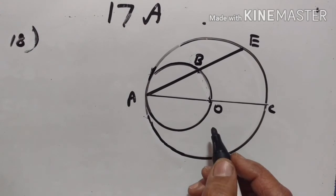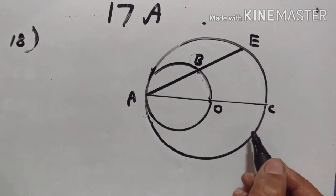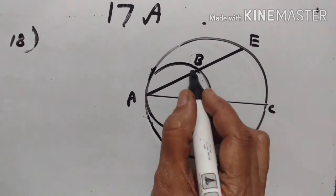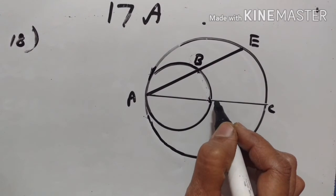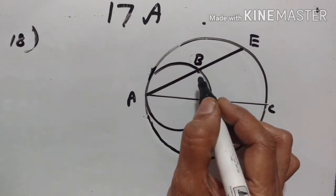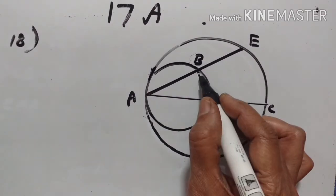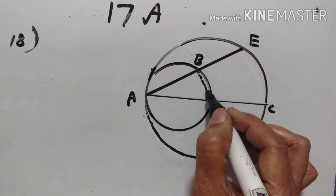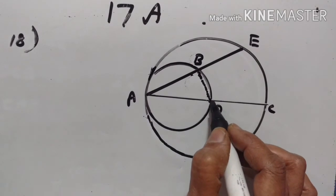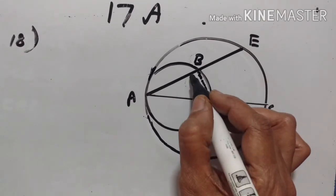18th problem. In this figure, AC is a diameter of the bigger circle whose center is O. A circle is described on AO as diameter. AE is a chord of the larger circle that intercepts the smaller circle at B. We have to prove that AB is equal to BE. Let us join OB. In the smaller circle, AO is the diameter, therefore angle ABO is the angle in the semicircle, so this is 90 degrees.